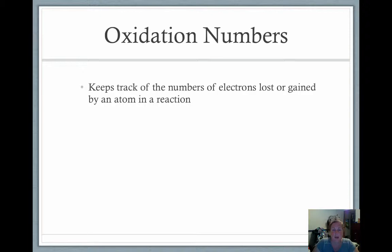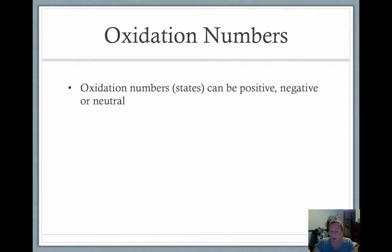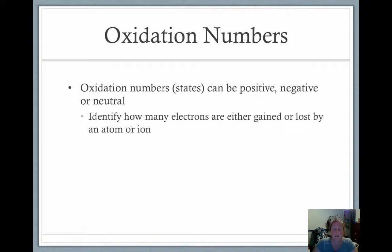Oxidation numbers help keep track of the numbers of electrons lost or gained by an atom in a reaction. Oxidation numbers, or oxidation states, can be positive, negative, or neutral. You should have your reference table and periodic table out at this point, because we'll be utilizing that. These help to identify how many electrons are either gained or lost by an atom or an ion.